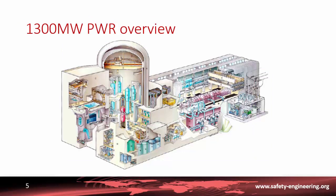This is an overview of a 1300 MW pressurized water reactor. In the middle you find the containment and the primary system, with the reactor vessel and the steam generator. Beside it is the fuel building, where fresh fuel is inserted in the pool before being loaded into the reactor vessel. When the fuel is used — what we call spent fuel — it is returned to the pool to be cooled until it can be transported outside of the plant.